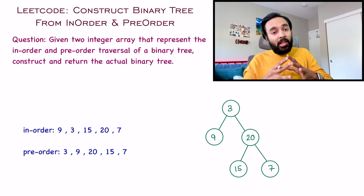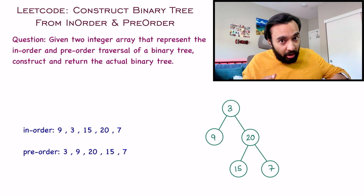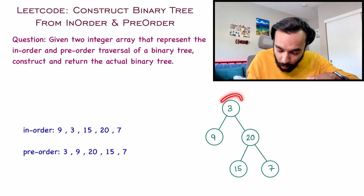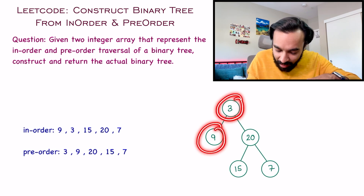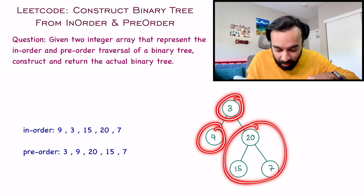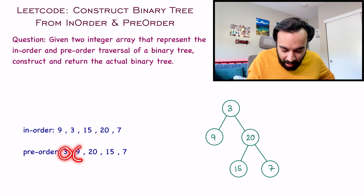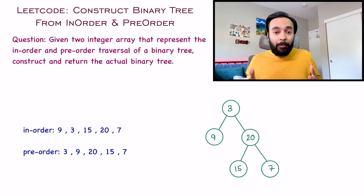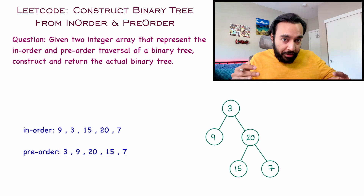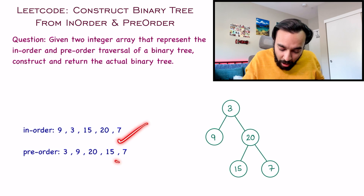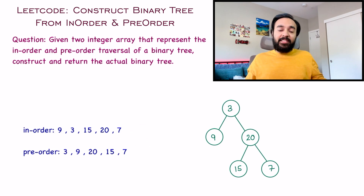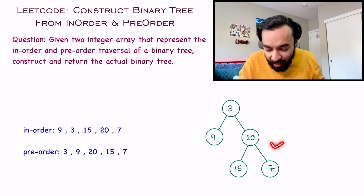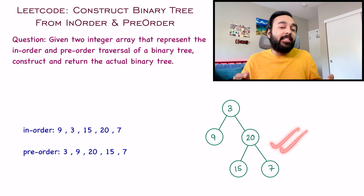Similarly, you can check the pre-order traversal also. The pre-order traversal is root, then the left, and then the right. So you get root, then the left, and then all the elements in the right. You can see how for this particular input case, you can only construct one binary tree and this is your answer.